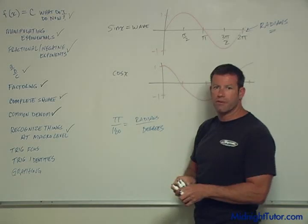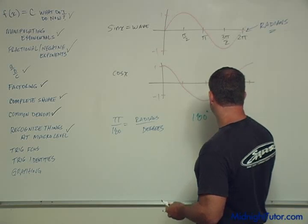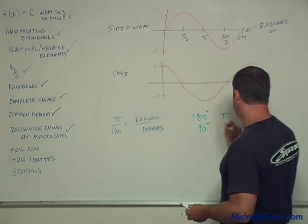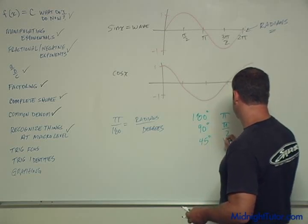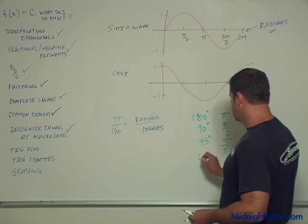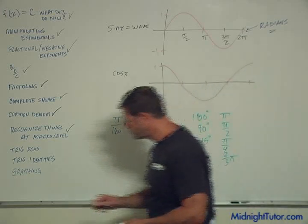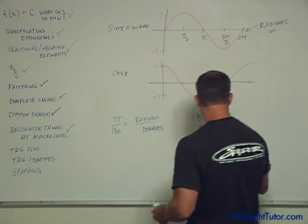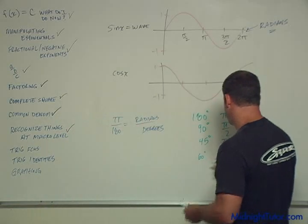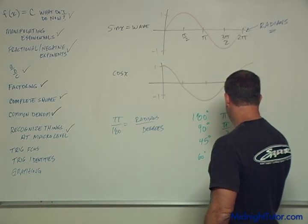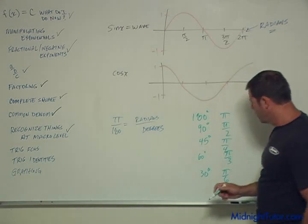And so then there's a few common things you have to know, right? So 180 degrees is pi. 90 degrees is pi over 2. 45 degrees is pi over 4. 60 degrees is 2 thirds pi. I'm sorry. That's not right. Pi over 3. And 30 degrees is pi over 6.